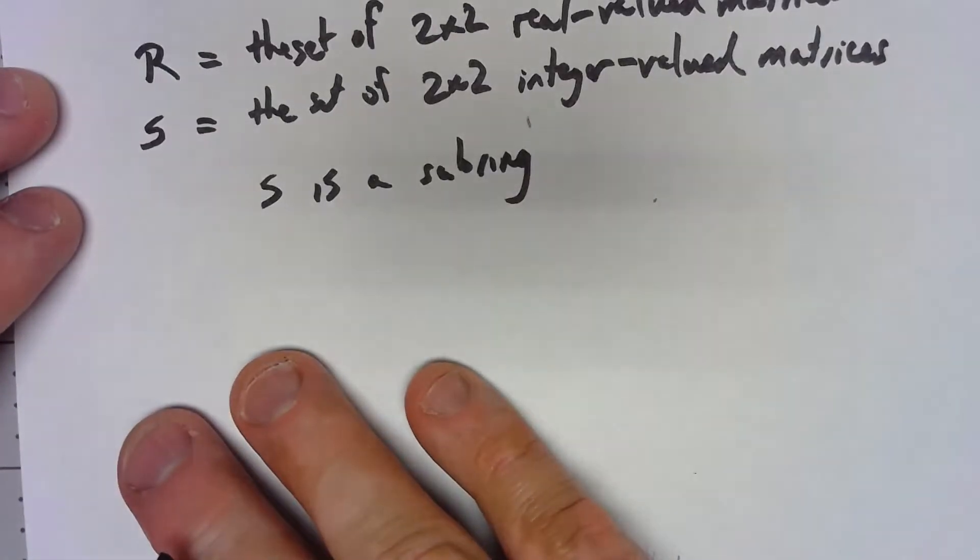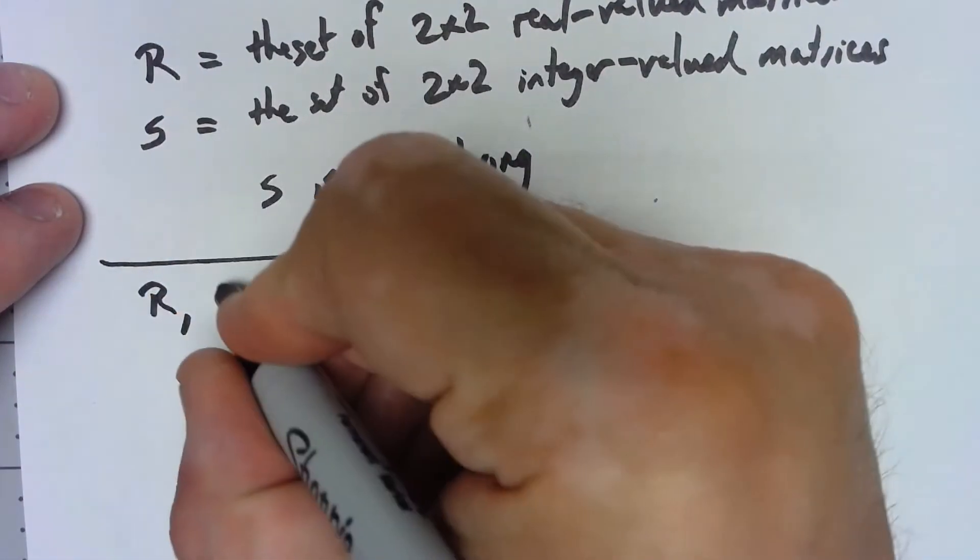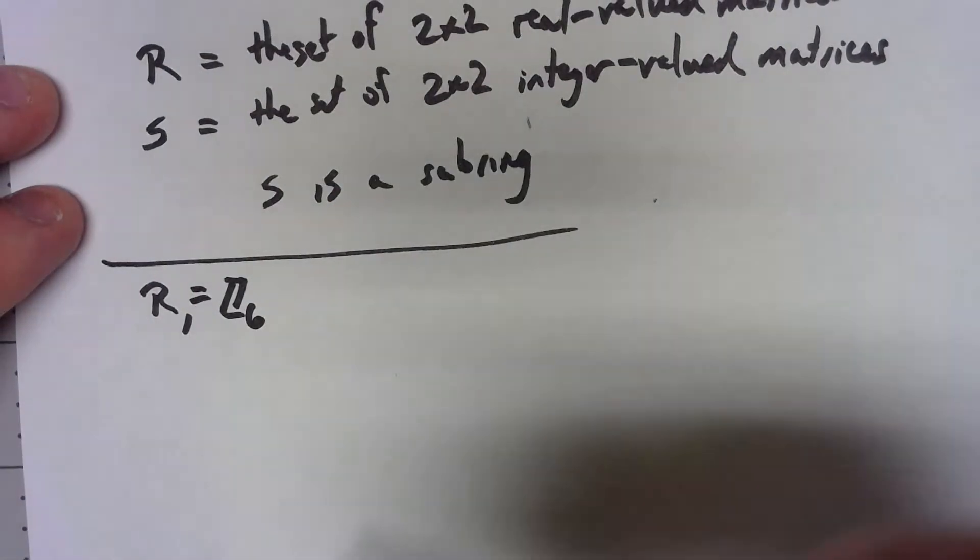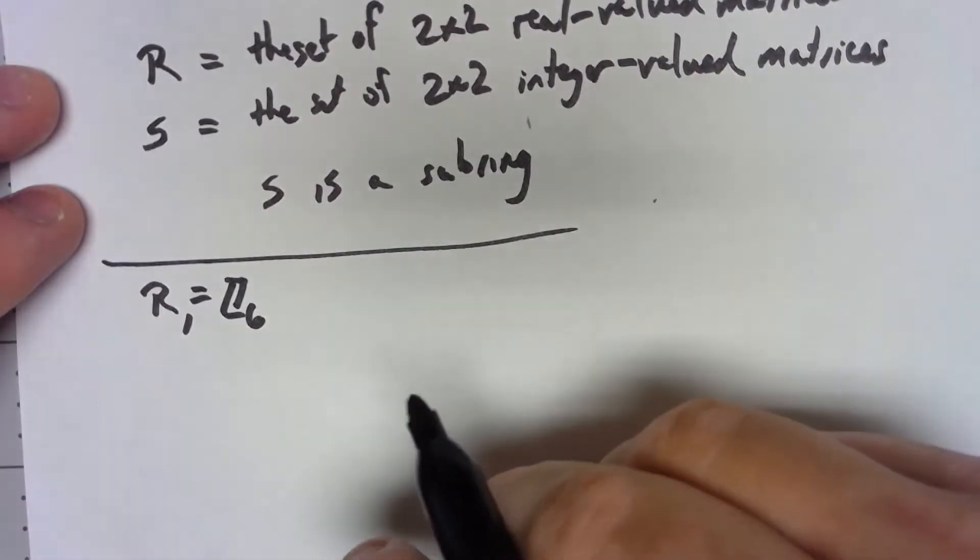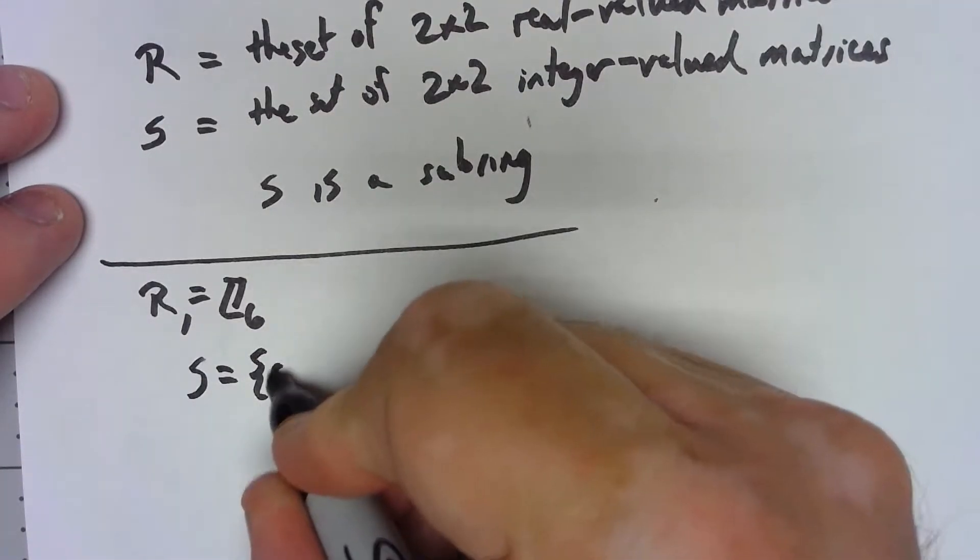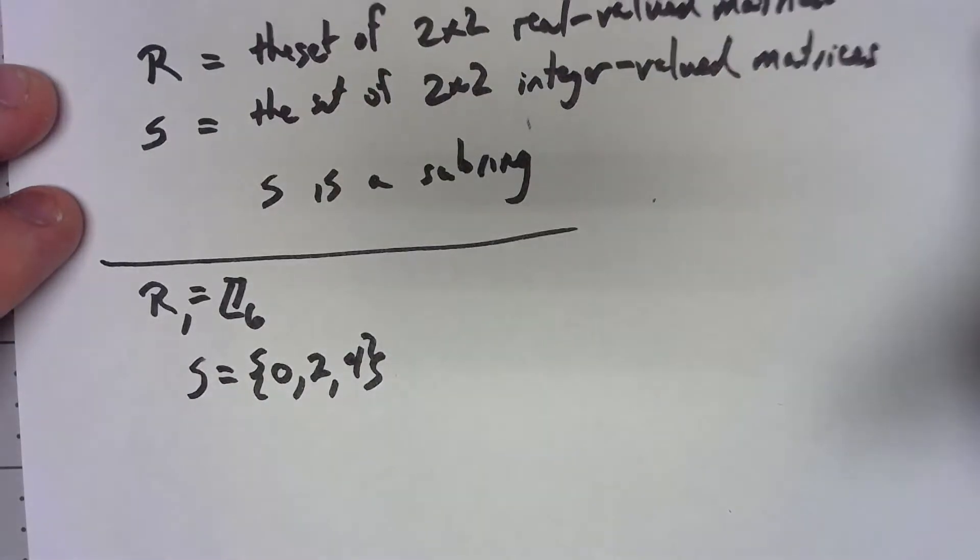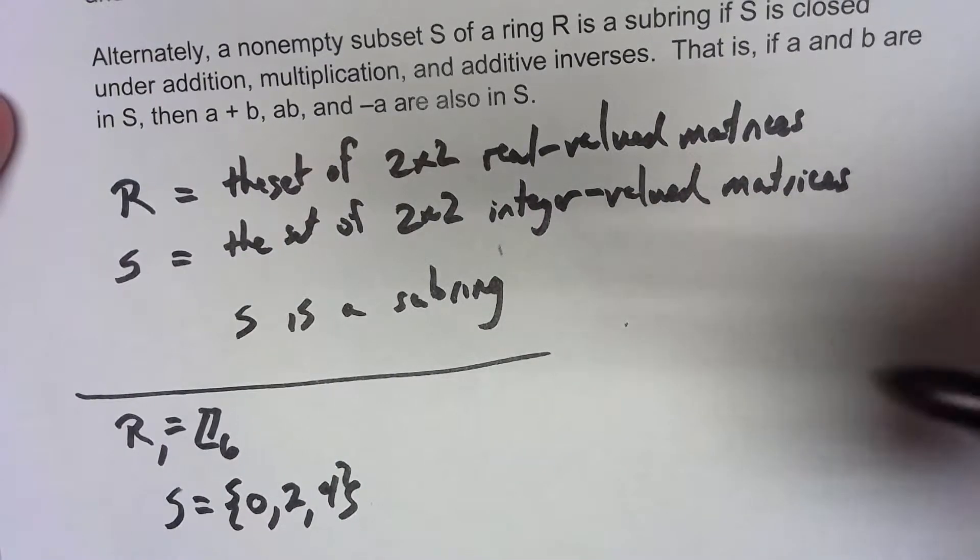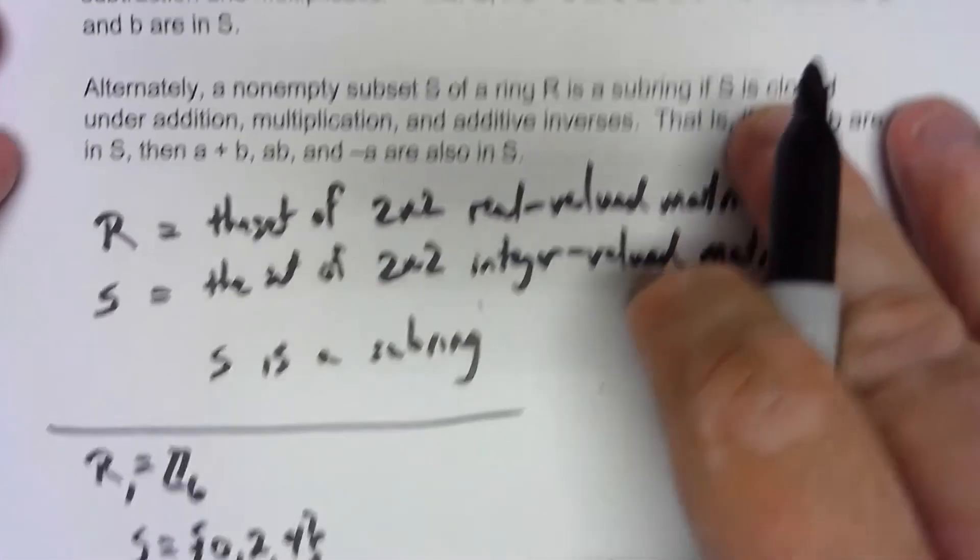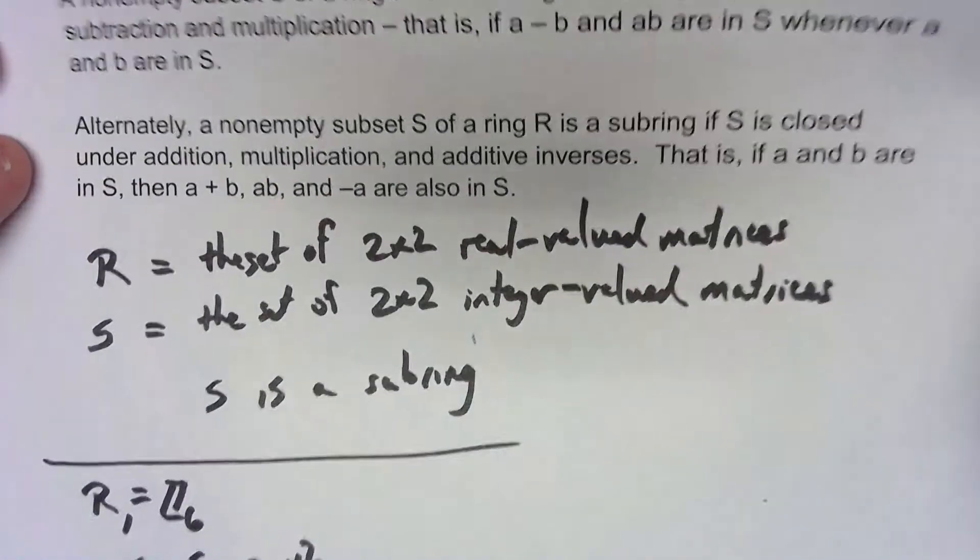Okay, another example I want to look at: let's say R is Z6, again using operations modulo 6, and I'm going to say S is equal to the set {0, 2, 4}. Okay, so I want to check that using the second way of doing things. I want to check that that set is closed under addition, multiplication, and additive inverses.